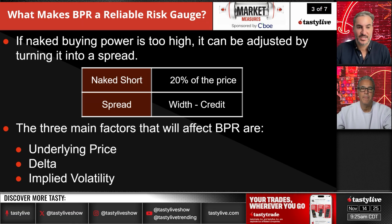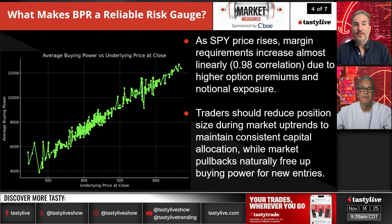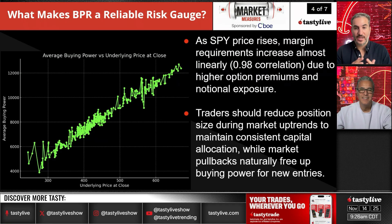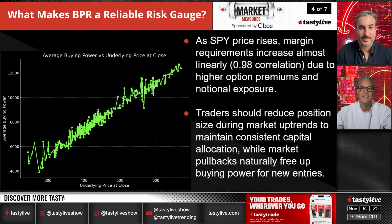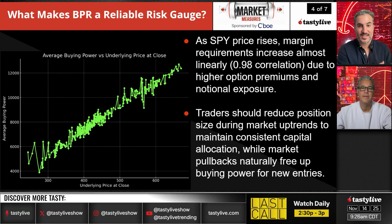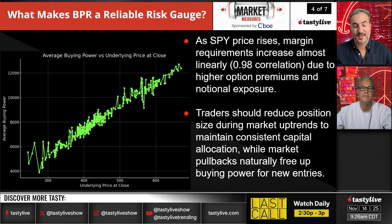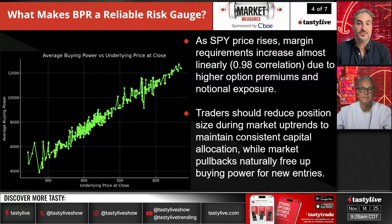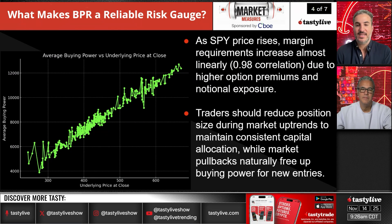As the SPY price rises, margin requirements increase almost linearly — a perfect correlation of buying power increasing based on price. That's not a shock because price is one of the inputs into risk. A stock at $10 can only go to zero, but a stock at $100 has a lot more risk because it can fall from $100 to zero. So as the stock goes up, your buying power requirement increases as well.